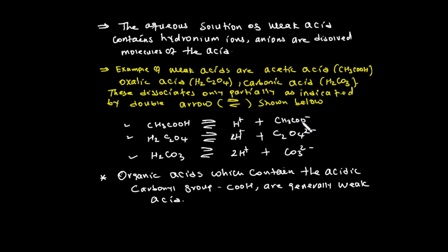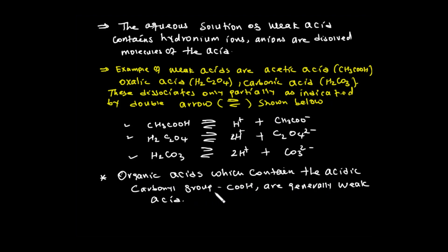For example, acetic acid dissociates to give H3COO⁻ ions. If oxalic acid dissociates, the reaction is reversible. Weak acids such as acetic acid, oxalic acid, and carbonic acid dissociate partially, indicated by a reversible arrow. This means the dissociation goes both ways.